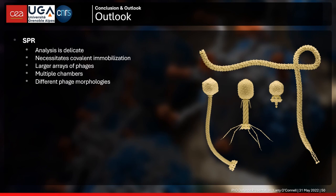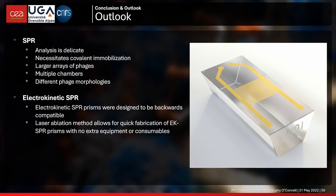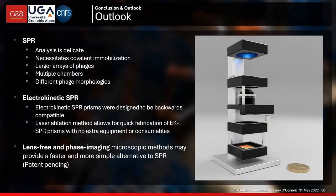We should also look at immobilizing different phage morphologies — while we focused on Podoviridae, there's also Inoviridae, Myoviridae, and Siphoviridae, especially Myoviridae which appear frequently in the literature. In terms of the electrokinetic SPR devices — designed to be backwards compatible — they should work with all of our existing SPR devices, and with minimal extra time should be incorporatable into any experimental work benefiting from electrokinetic mass transport. The laser ablation method allows quick fabrication with no extra equipment or specialized training. The lensless and phase imaging methods might provide even faster, simpler alternatives to SPR, and we have a patent application pending for using lensless techniques for phage susceptibility testing.